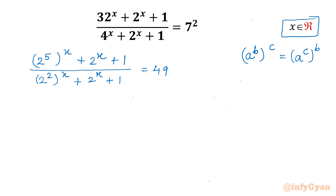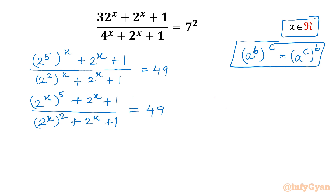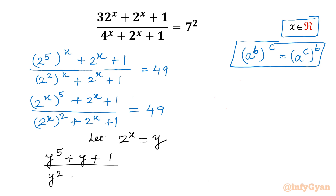Using this property I can swap the powers, so I will be writing (2^x)^5 + 2^x + 1 divided by (2^x)^2 + 2^x + 1, equal to 49. Now our substitution will come: let 2^x = y, so our equation will convert to (y^5 + y + 1) / (y^2 + y + 1) = 49.